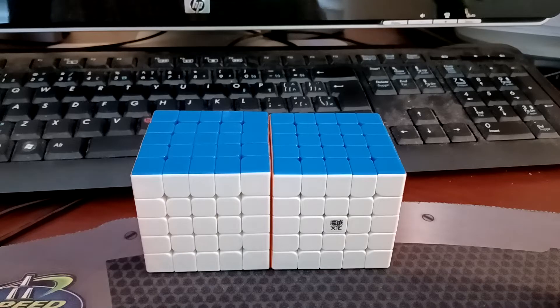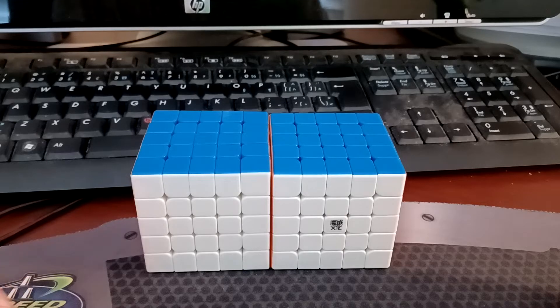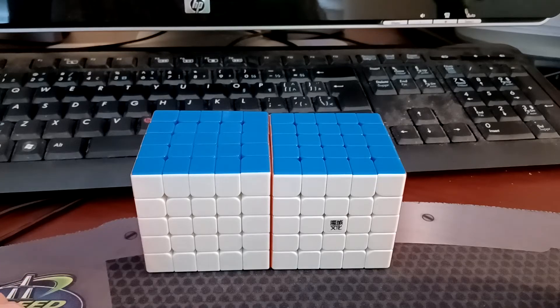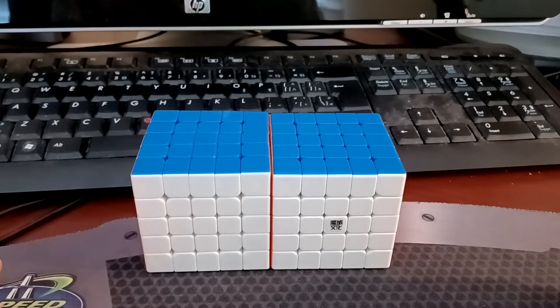So these will all be focusing on specific last two centers cases, and more specifically, cancelling into commutators in all the cases that I know where you can do that. So without further ado, let's get started.